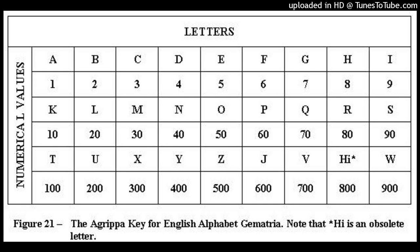Here is the gematria of the Latin alphabet: A=1, B=2, C=3, D=4, E=5, F=6, G=7, H=8, I=9, J=10, K=20, L=30, M=40, N=50, O=60, P=70, Q=80, R=90, S=100, T=200, U=300, V=400, W=500, X=600, Y=700, Z=800, and=900.